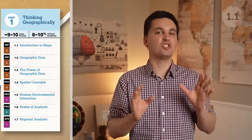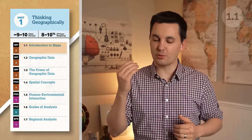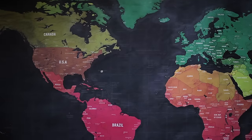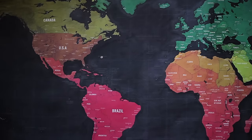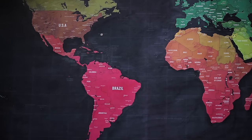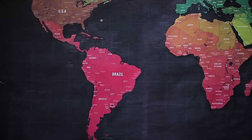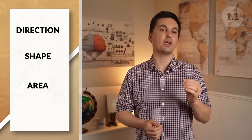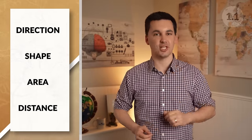Now that you have your study guide out and you are ready to go, let's review Unit 1. The first part of this unit is all about maps. Whenever we are looking at a map, we are looking at a distorted image of the globe. Every map projection has distortion in either the direction, shape, area or distance. This happens because you can't take a three-dimensional object such as a globe and perfectly project it onto a two-dimensional surface.